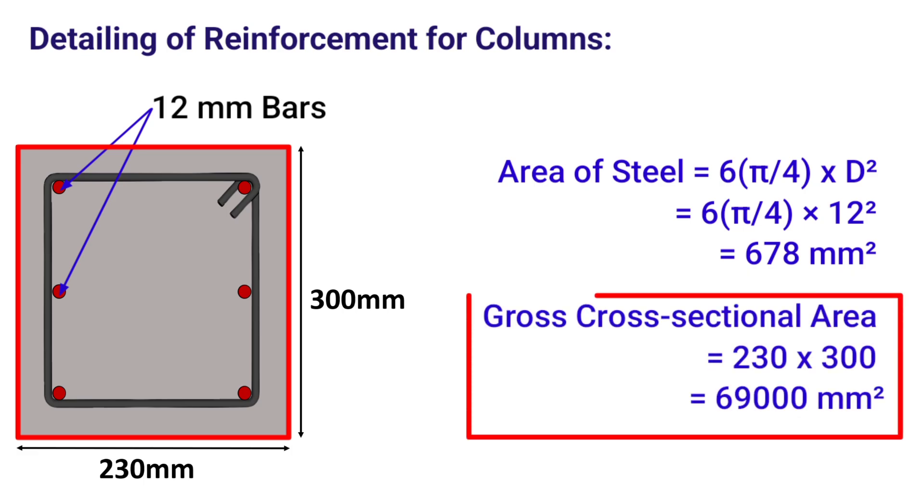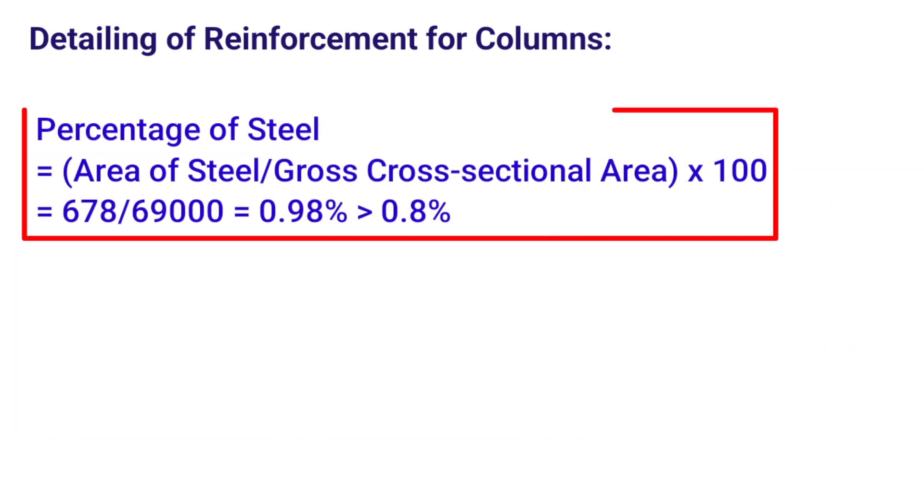On substituting these values, area of steel will be equal to 678 mm². The gross cross sectional area will be equal to area of cross section of this column which is 230 x 300 mm. Now let's check if the calculated area of steel satisfies the criteria. Percentage of steel will be equal to area of steel upon gross cross sectional area into 100. Area of steel is calculated as 678. The gross cross sectional area is 69,000 mm². On substituting these values, percentage of steel will be equal to 0.98 percent, which is greater than 0.8 percent, hence satisfying the criteria.